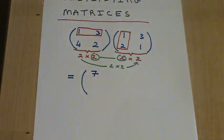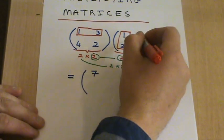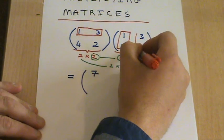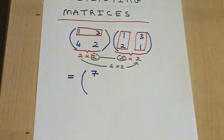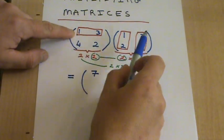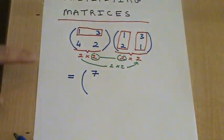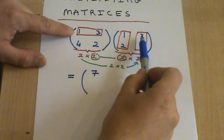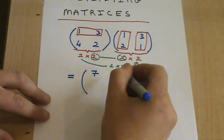To get the next entry on top, we're going to use this top row again and this second column. This time we're going to multiply the 1 by the 3 and then the 3 by the 1. So multiplying the 1 by the 3 gives you 3, plus 3 by 1 is another 3, and that gives you 6.